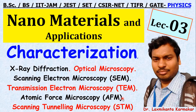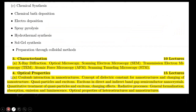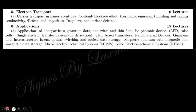AFM and STM are similar but STM is used for conducting materials. You use scanning tunneling microscope for conducting materials, and for non-conducting materials you can use AFM. All the details of these instruments used to characterize nanomaterials will be discussed in this lecture. You can see this is the syllabus — we covered parts 1 and 2 in the last two lectures. Today we want to cover part 3, which is the characterization. In upcoming sessions we will cover optical properties, electron transport, and applications.